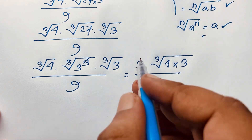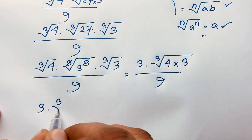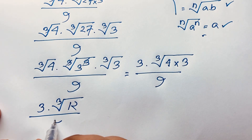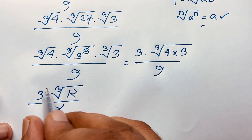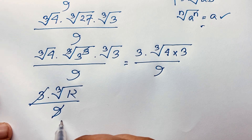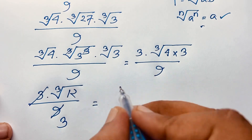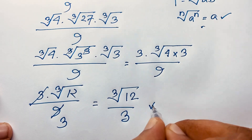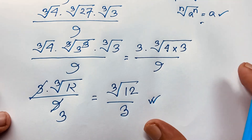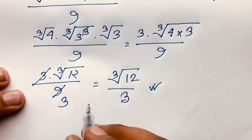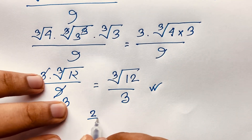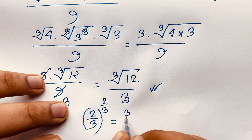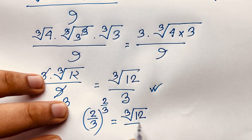Now, cube root of 12 — since 4 times 3 equals 12 — over 9. Then 9 divided by 3 gives 3, so we get cube root of 12 over 3. This is our final answer: 2 over 3, whole to the power 2 over 3, equals cube root of 12 over 3.